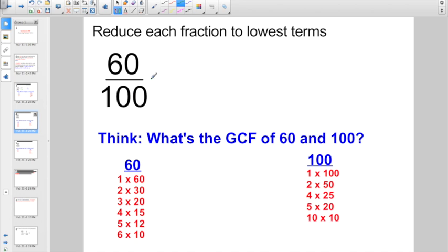So 60 over 100. The big thing I see a lot of kids do, they go, Oh, Mr. Heinz, I can divide the numerator and the denominator by 10. And you're absolutely right. You can. So then I see kids going off doing this. 60 divided by 10 is 6. 100 divided by 10 is 10. But the problem is, when you're all done, look at the 6/10. Is that as low as it can go?